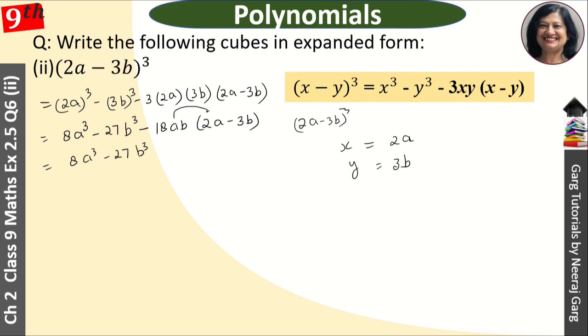This is 18ab. That is 36a into a, which will be a² and b.